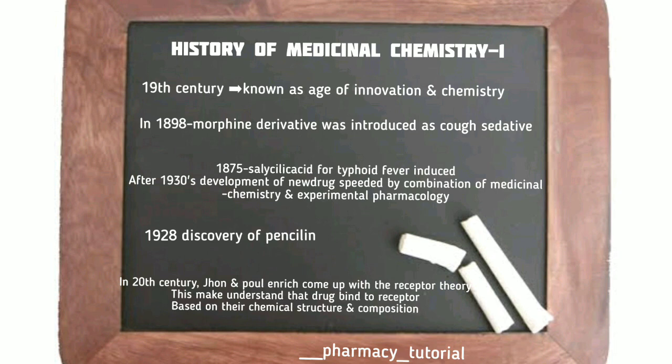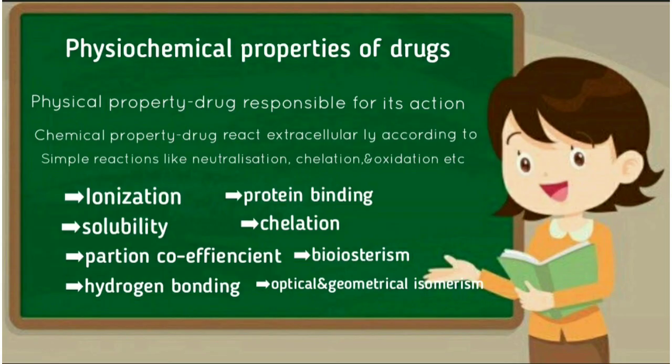In the 20th century, John and Paul Ehrlich came up with the receptor theory. This led to an understanding of how a drug binds to a receptor based on its chemical structure and composition. That is all about the history of medicinal chemistry.